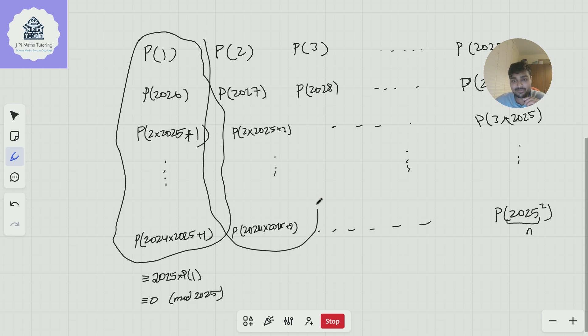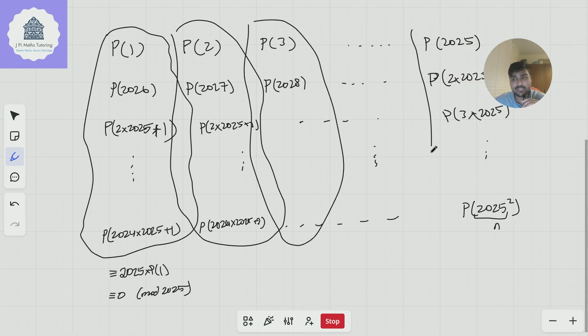The same thing is true of this column. This is going to be 2025 times p of 2, but again, that's 0 mod 2025. Same with this column, and same with all these columns. All of these columns here are going to add to 0 mod 2025, so all 2025 squared of these terms are going to add to 0 mod 2025.